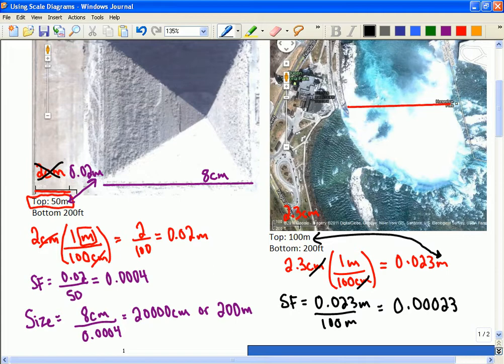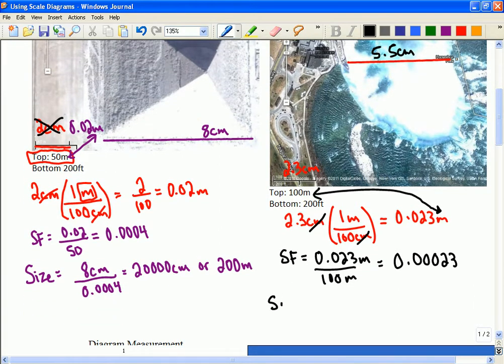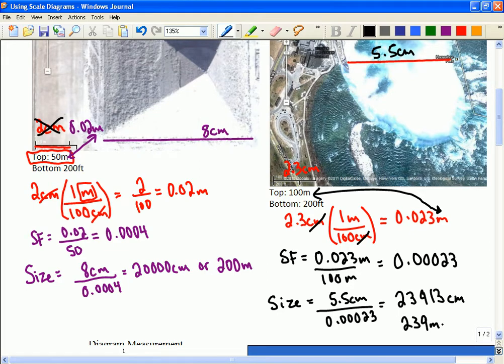So, make a prediction. Which one do you think is bigger? Would the Great Pyramid fit inside Niagara Falls? What do you think? Or is it bigger? Barely fit? Okay, well, let's see. According to our map here, I get 5.5 centimeters. So, the real world, our size is going to be 5.5 centimeters divided by 0.00023. And that's 23,913. 239 meters.